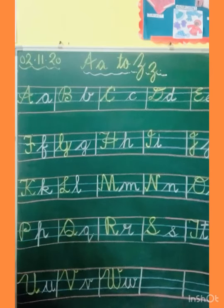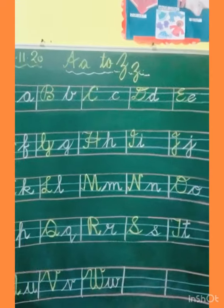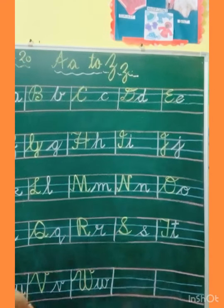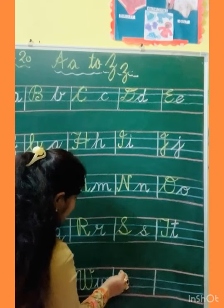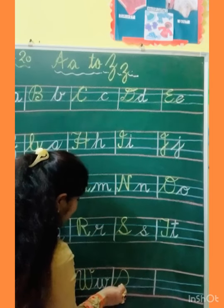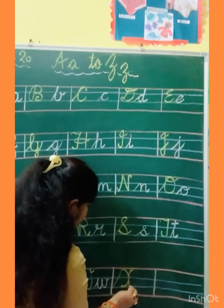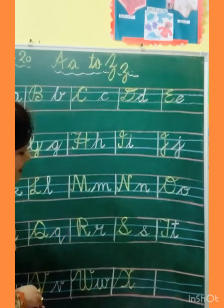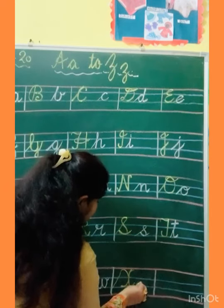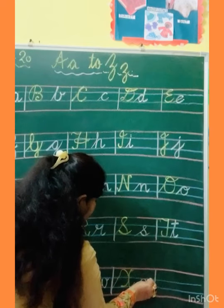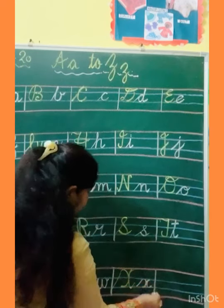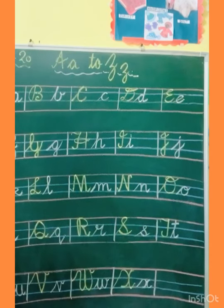Now X. How to make capital X? Touch the third line, slanting line, make curve, then go back, then make curve, touch the line, and kick. And small X: slanting, turn, go up, make slanting, and kick. This is small X.